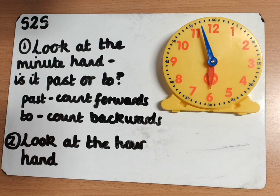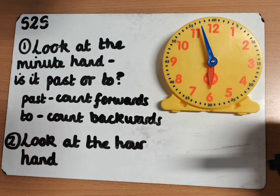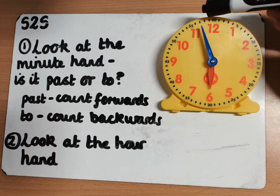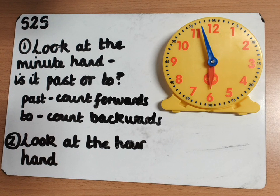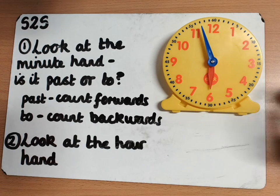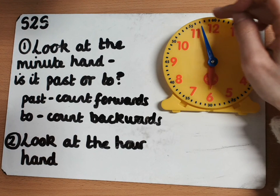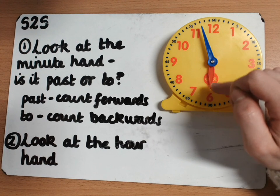Step one: look at the minute hand — is it past or to? It's to, so I'm going to be counting backwards: 60, 59, 58, 57. Now it's not 57 minutes past — I need to make sure it's in to. Therefore I need to do 60 take away 57, or the difference between the two numbers, which is three. So it's three minutes to.